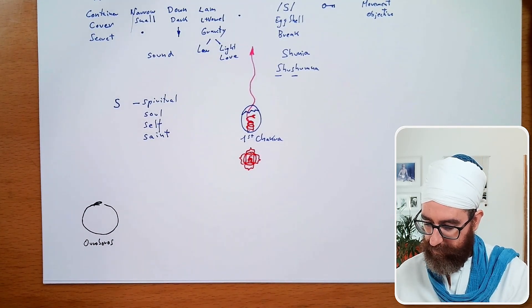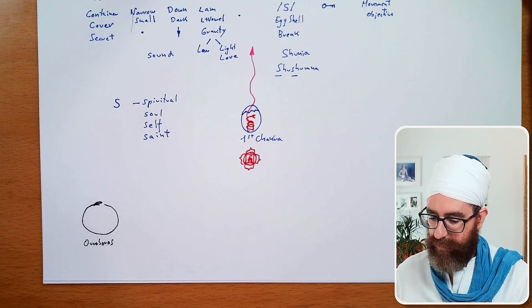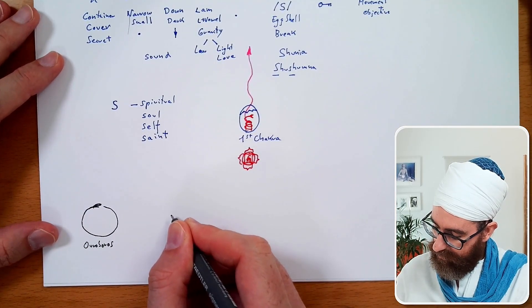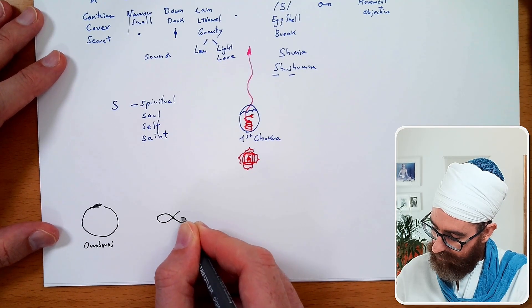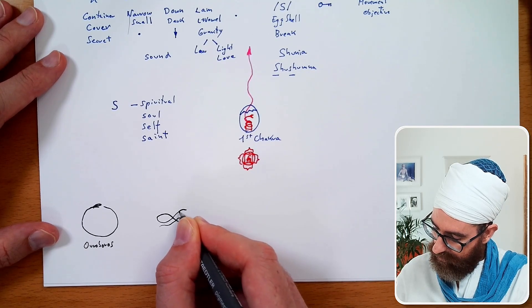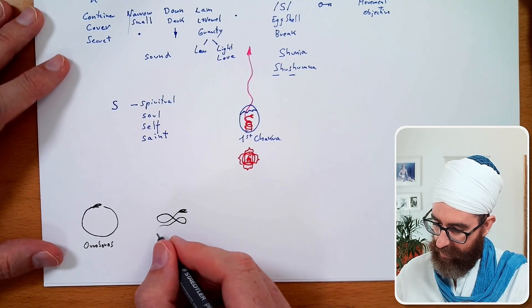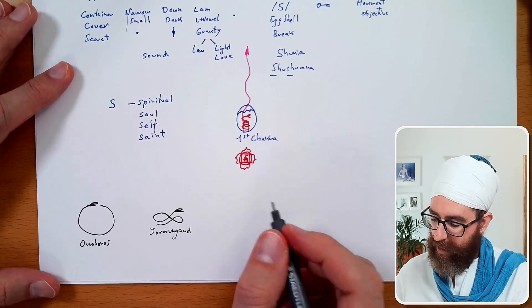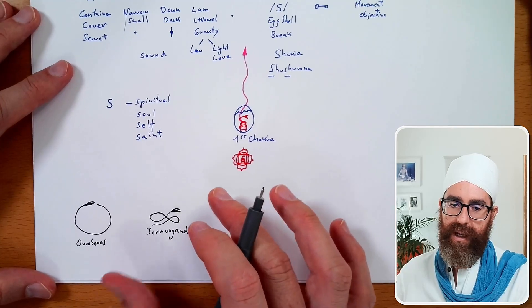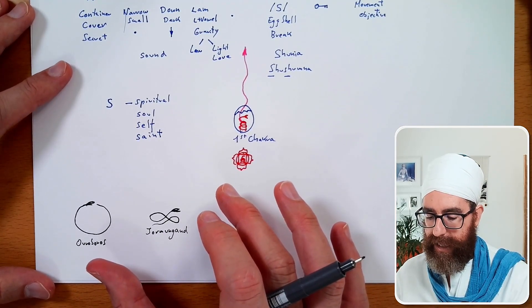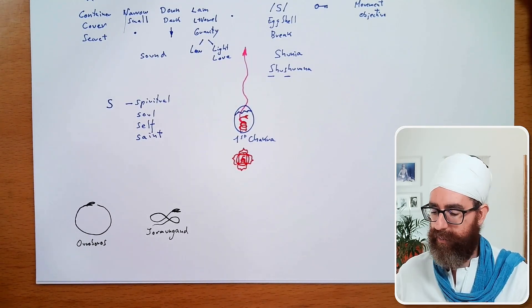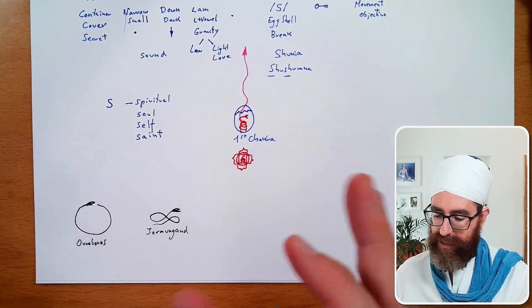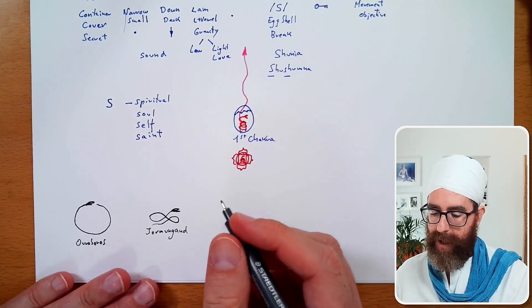Another symbol comes from Norse mythology — a kind of snake called Jormungand. It's said this snake was encircling the world. There is a whole battle between Thor and Jormungand because Thor is trying to get it out as it's damaging the earth. There are many mythologies, many stories like that.